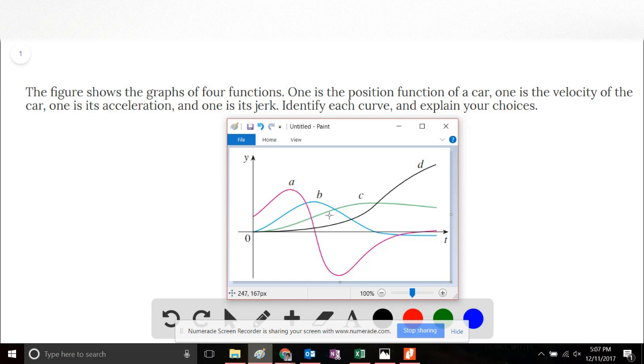We see that this is only true of graph C, because curves A and B have negative parts, meaning there's no way that curve A or curve B can describe the ever-increasing behavior of D. So curve C must be the derivative of curve D.